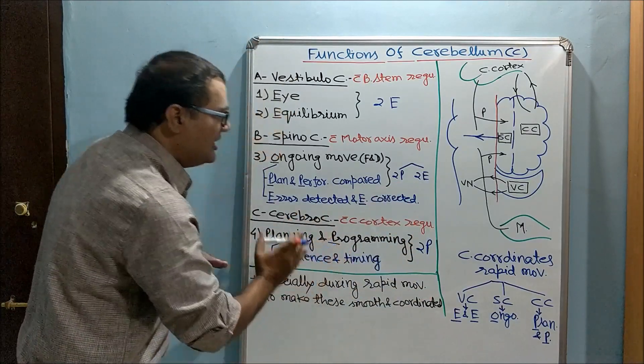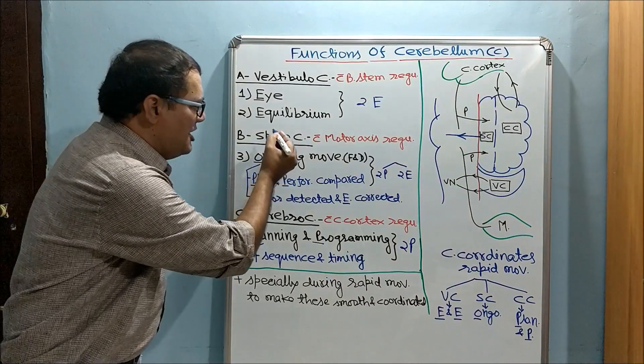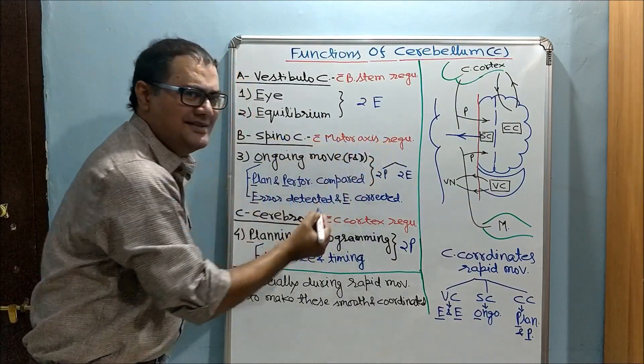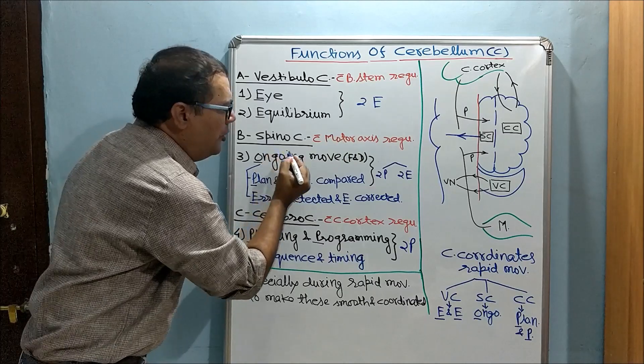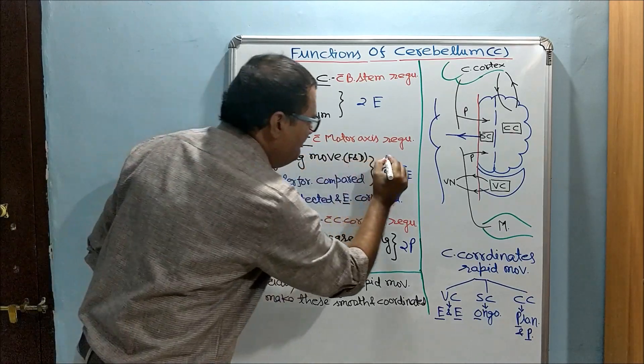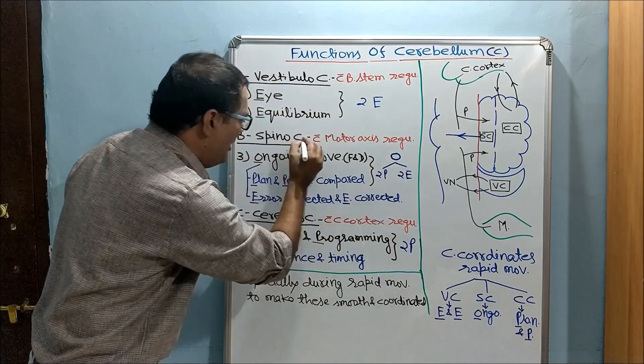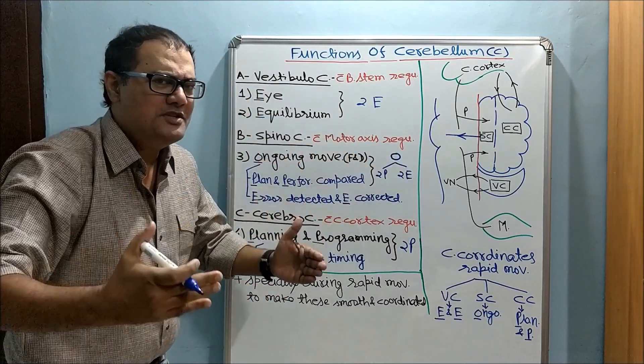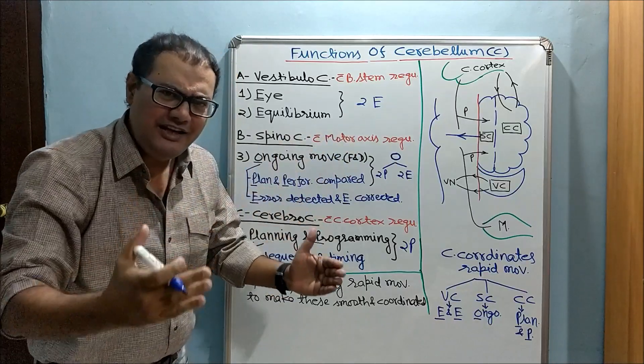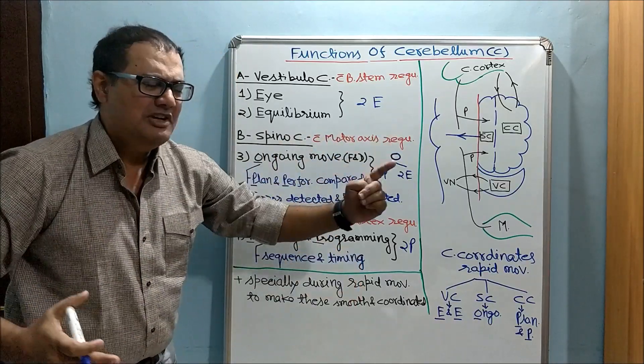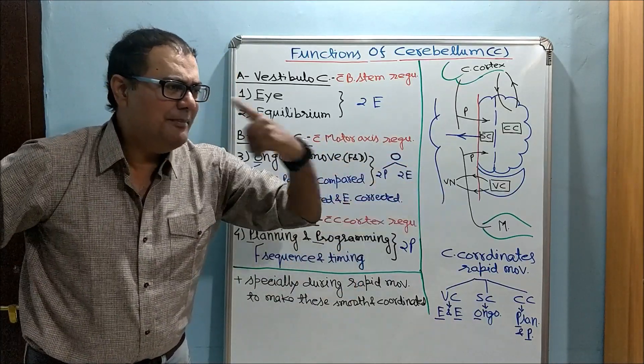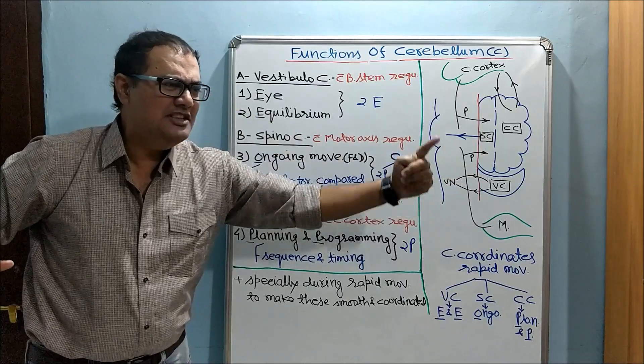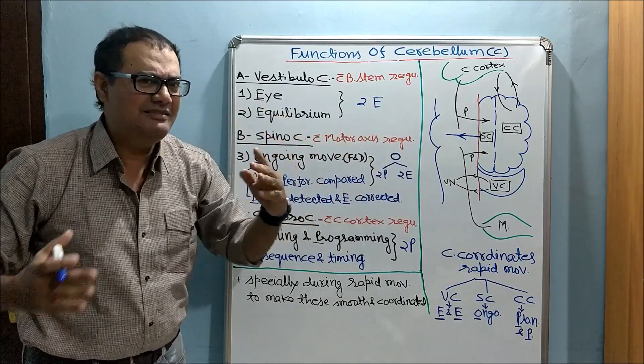Now spinocerebellum, which works with whole motor axis and regulates ongoing rapid motor activities. So from ongoing, we can remember by O: spino, ongoing rapid motor activity in every term - in force, direction, rate, range also. Without spinocerebellum, rapid motor activity may lose everything and may become something like this.